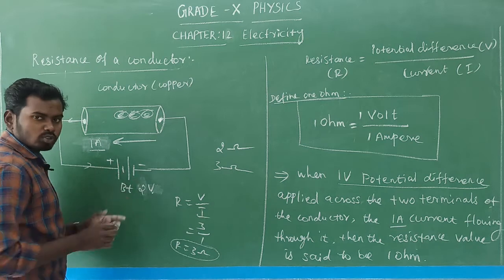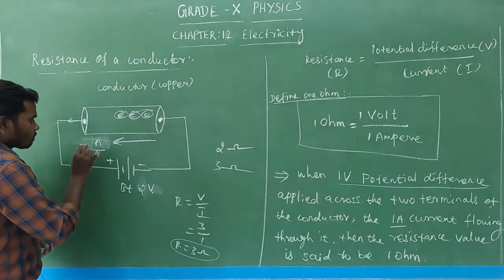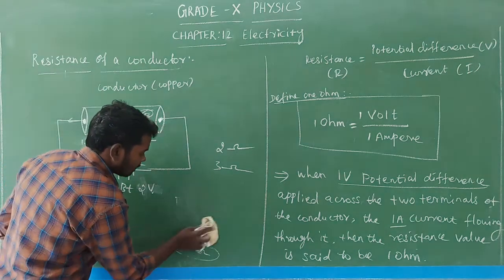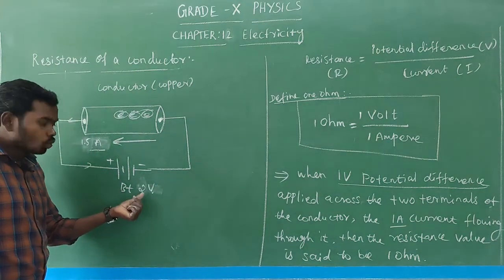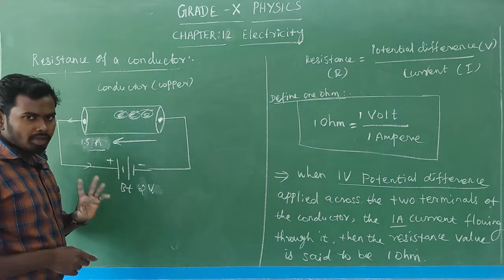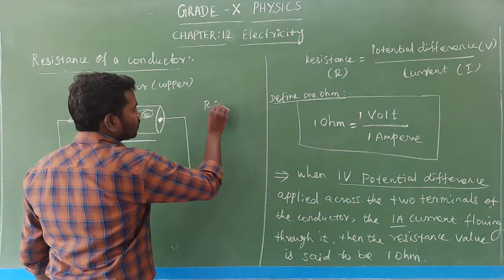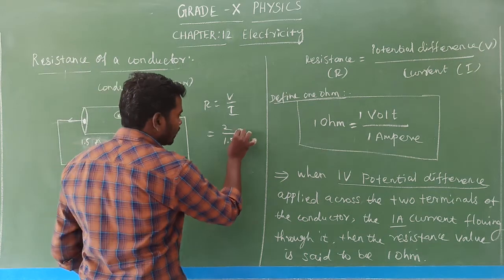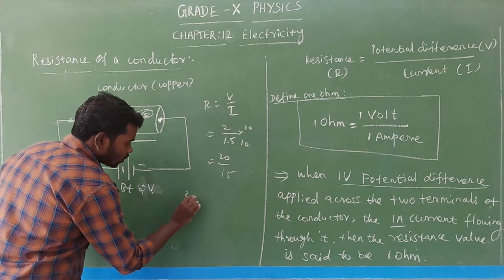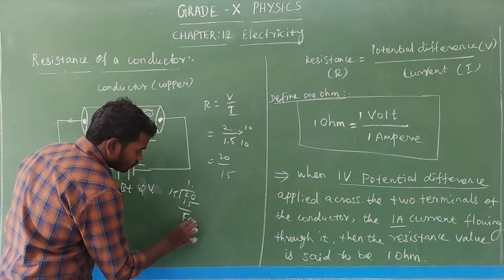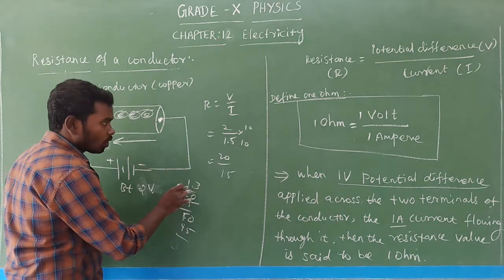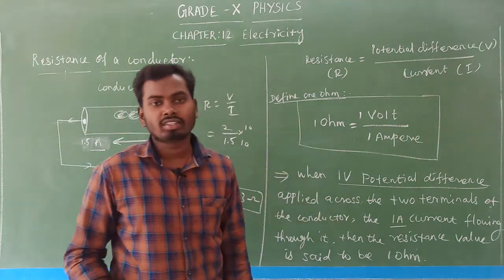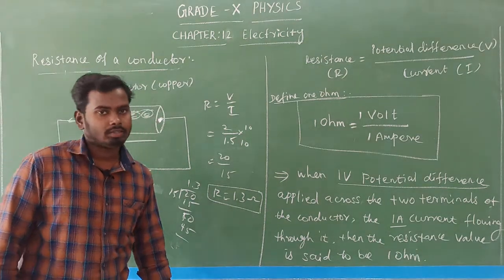Suppose a 2 volt potential difference is applied across the two terminals of the conductor and the current value is 1.5 ampere. What is the resistance? R = V/I = 2/1.5. Multiply both by 10: 20/15. Dividing gives us 1.3 ohm. That is the resistance value.